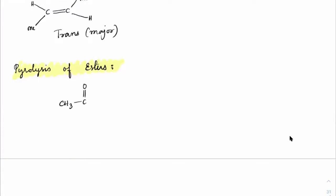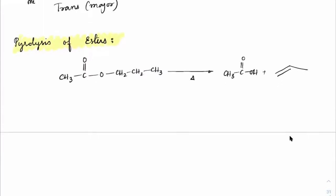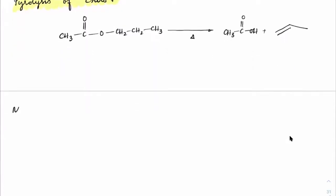Basically what we are doing here is taking esters and just heating them. On heating, the ester changes to give CH₃C(=O)OH (acid) and an alkene. This type of mechanism is called the Ei mechanism. Elimination is happening on the alpha carbon position only, so we call it Ei — where 'i' represents internal or intramolecular mechanism.